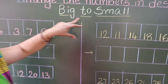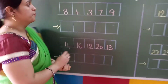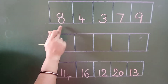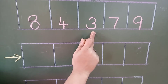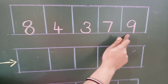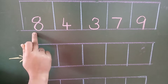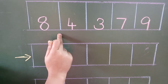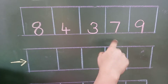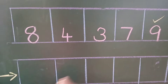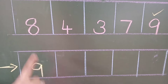Descending order means what? Big to small. See students, let us read the numbers first: number 8, number 4, number 3, number 7 and number 9. So we have to arrange these numbers in descending order — we have to see which is the biggest number first. You have to remember the backward counting. Which number will come first? Number 9. So write down here number 9. Before number 9, which number will come?